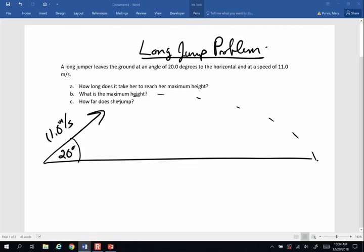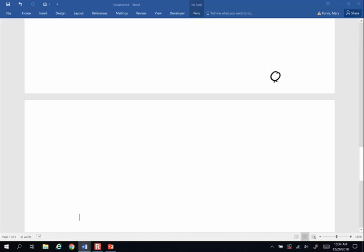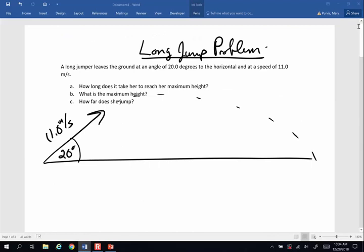How long does it take her to reach her maximum height? What is the maximum height and how far does she jump? So here goes nothing. If you've got any sort of projectile that is shot at an angle, the very first thing you do, always, is break that up into vertical and horizontal components.